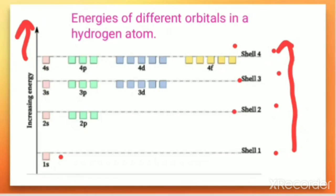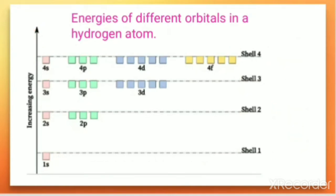In the second shell, which has 2s and 2p, both have the same energy as observed in the plot. In the third shell, 3s, 3p, and 3d are all on the same line, showing they have the same energy. In the fourth shell, 4s, 4p, 4d, and 4f are all on the same line, indicating they also have the same energy.